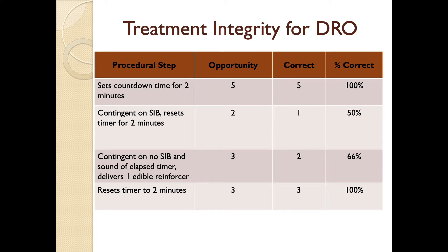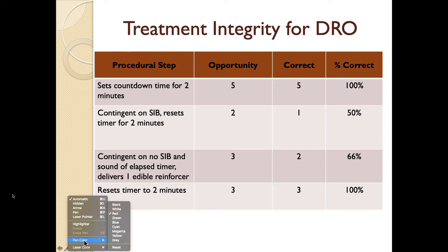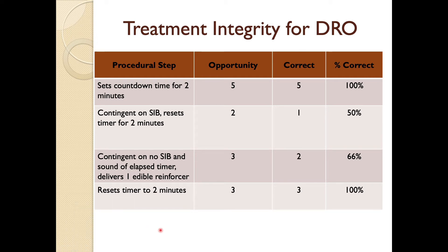When capturing data on treatment integrity, you need to consider all possible iterations of what can happen. Let's take the example of Differential Reinforcement of Other behavior — DRO. To determine if a parent or teacher is implementing that intervention correctly, we have it written out. We know there are things the person should do contingent on the absence of problem behavior during a certain period, and things to do contingent on the occurrence of problem behavior.